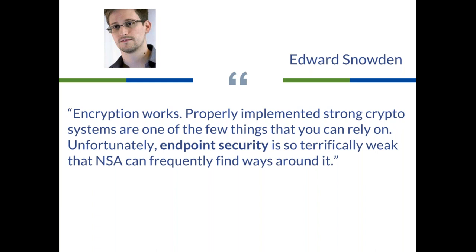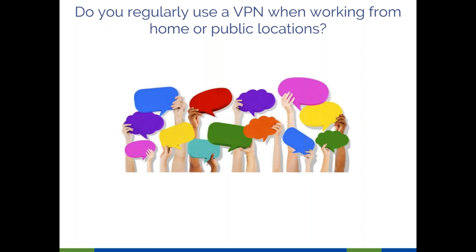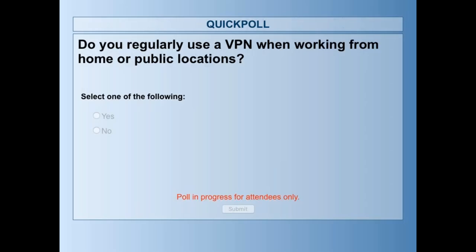The main point is endpoint security — the security of the devices you're using and the networks they're on. That's where all the weaknesses are. Our encryption by itself, which we talked about last week, is actually quite strong, especially if you implement it well. Does anyone here regularly use a virtual private network or VPN when working from home or from public locations?